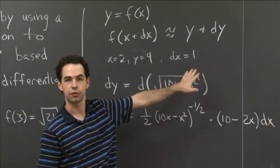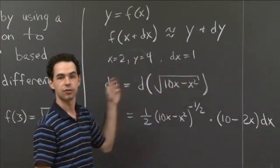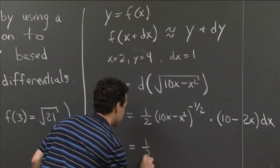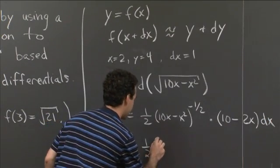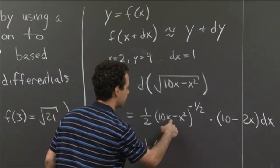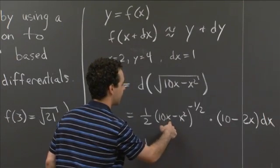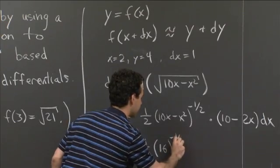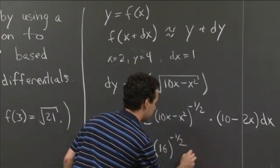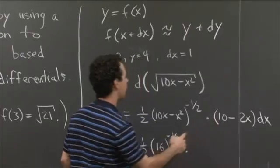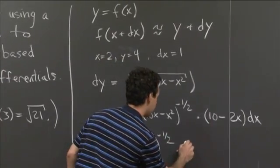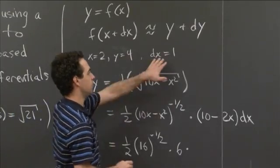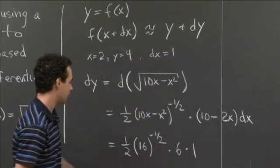So the value of dy that we want is equal to ½ times, well, 10 times 2 minus 2 squared. That's 16^(-½) times, so here x = 2. 10 minus 4 is 6 times dx is just this 1 that we're interested in.